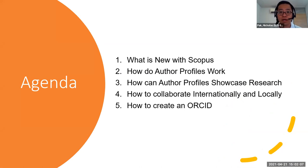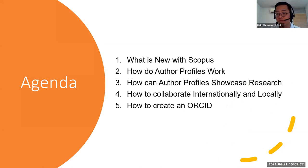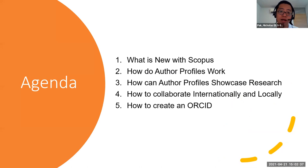Today's session will be a quick update on what is new with Scopus. I'll share information on how Scopus indexes journals, some key concerns around predatory publishing and how Scopus has addressed that, how Scopus author profiles actually work, how author profiles can showcase research, how we can collaborate internationally and locally within Malaysia, and how we can create an ORCID ID.